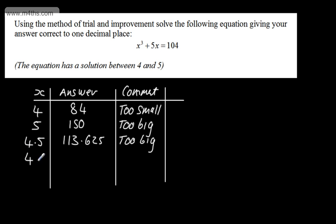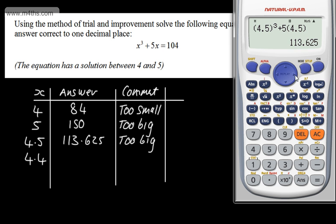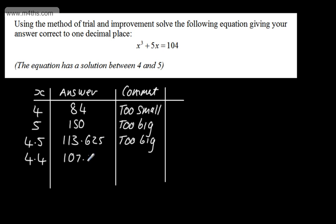The next logical step is to try 4.4. Don't try 4.48 or 4.49 — just try values to one decimal place. Substituting in 4.4 gives me 107.184. The comment is that this is too big. That tells me my answer is somewhere between 4 and 4.4.